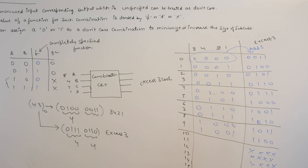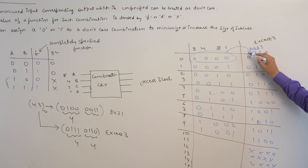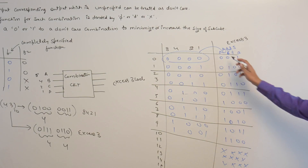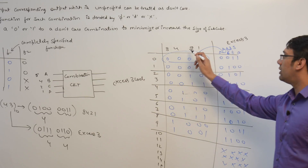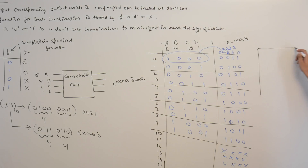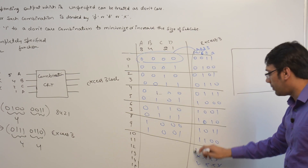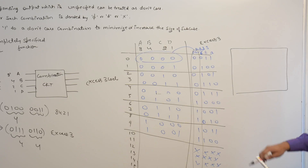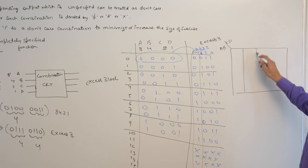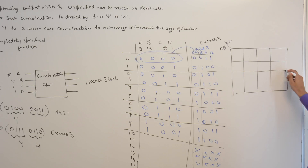We can assign the value 0 or 1 to a don't care combination to minimize or increase the size of the function. For example, let us label the bits as capital A, B, C, and small D. If we want to make a circuit for small D, this is a four-variable function. We can make a K-map for this, with variables AB on one axis and CD on the other.